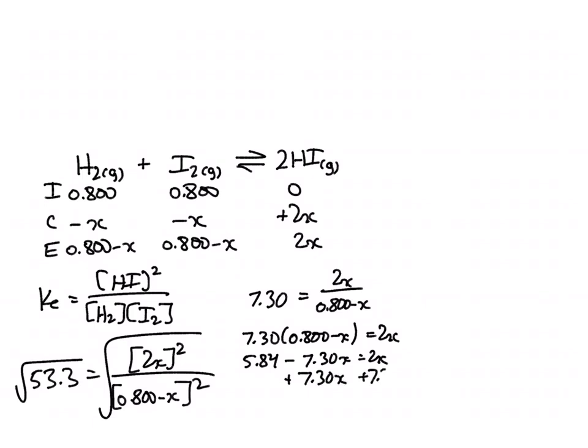Plus 7.30X to both sides. 5.84 is equal to 9.30X. Divided by 9.30 on both sides, and X is equal to 0.628.